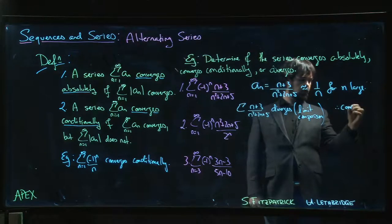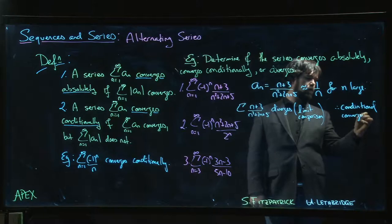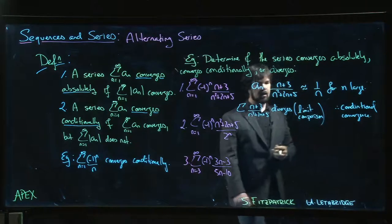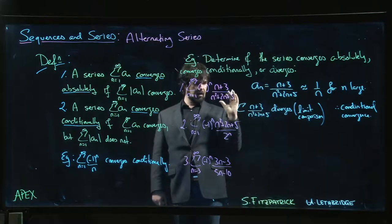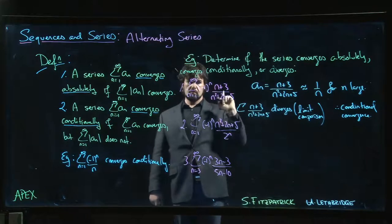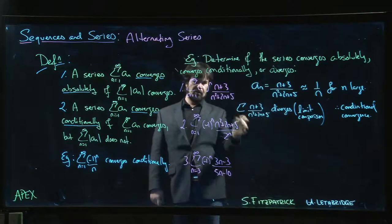So in this case we get convergence - this will be conditional convergence. It converges conditionally because this does converge by the alternating series test, but if you drop the (-1)^n it diverges. It's essentially the alternating harmonic series with a bit of clutter.